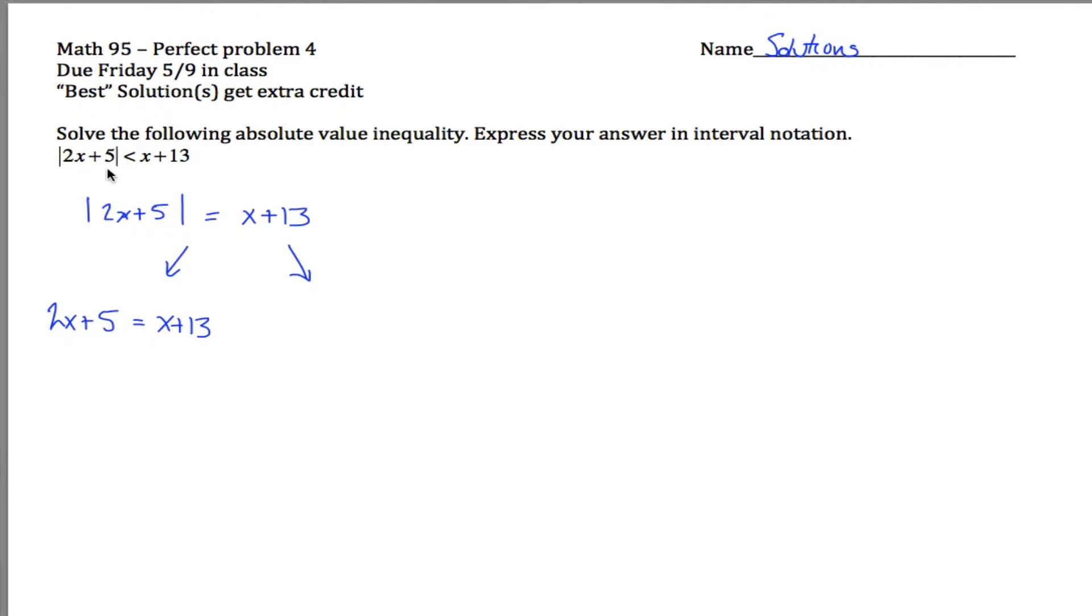What about the case that 2x plus 5 is negative? Well, if 2x plus 5 is negative, then what the absolute value symbols do is it changes the sign of 2x plus 5. Maybe 2x plus 5 is negative 7. Then what the absolute value symbols do is they say, okay, it makes it positive 7, so negative, negative 7.